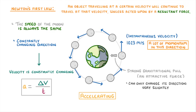So overall there are two things to think about: the instantaneous velocity of the orbiting object, and the gravitational pull of the larger object that it is orbiting. It's these two things together that result in a steady orbit.